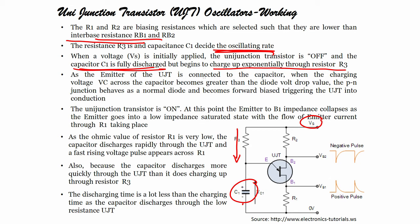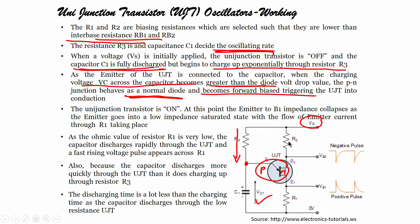When the charging voltage Vc across the capacitor becomes greater than the diode voltage drop, the p-n junction behaves as a normal diode and becomes forward biased, triggering the UJT into conduction. When the capacitor voltage increases beyond the p-n junction diode voltage drop, the UJT will start conducting — the UJT transistor is in the ON condition.